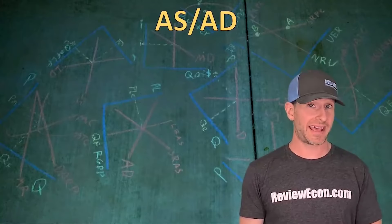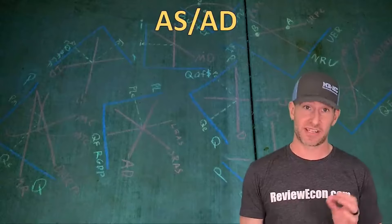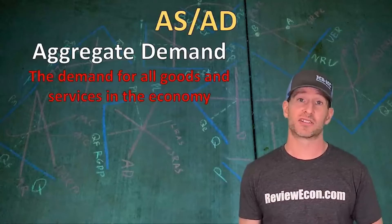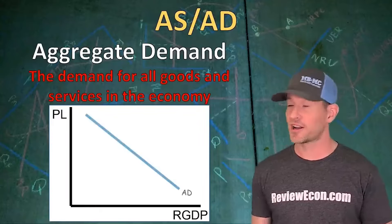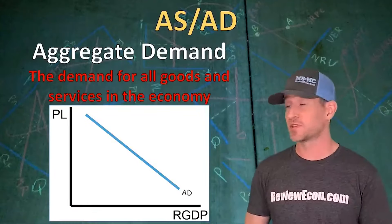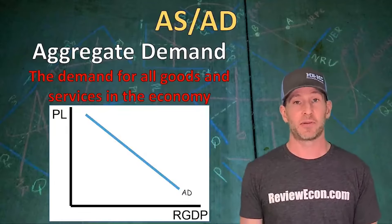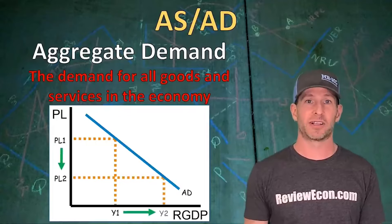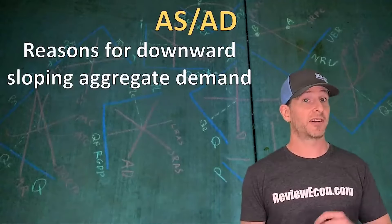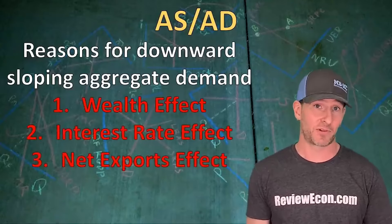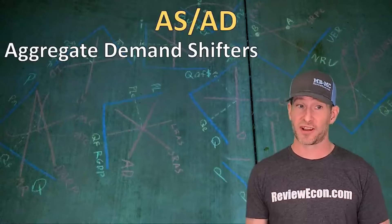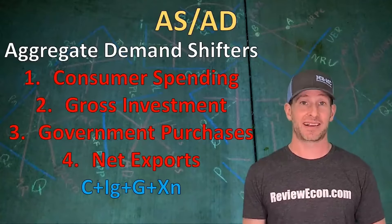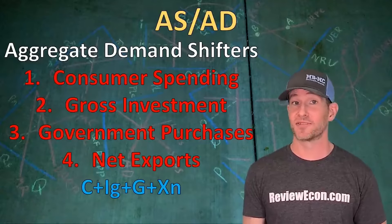The next graph is the AS-AD model — the aggregate supply, aggregate demand model of the entire economy. The aggregate demand curve is a demand curve for all goods and services within an economy. It's a downward sloping curve showing the inverse relationship between the price level and real GDP. The three reasons for its downward slope are the wealth effect, the interest rate effect, and the net export effect. The AD shifters are C plus I plus G plus X — consumer spending, gross investment, government purchases, and net exports.